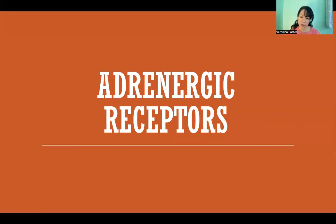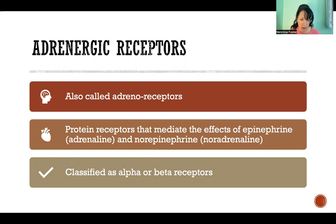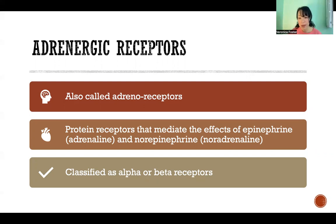In this video, I'm going to talk about adrenergic receptors. These are also called adrenoreceptors, and they are the protein receptors that mediate the effects of epinephrine, which is also called adrenaline, and norepinephrine, which is also called noradrenaline. Adrenergic receptors are classified as alpha or beta, and there are multiple types of each. I'm going to go through those differences, which of the two chemicals activate them, and what the effects are.